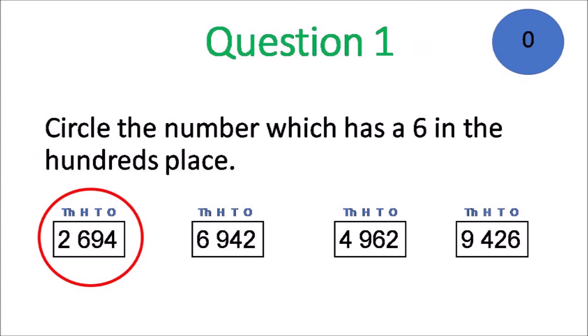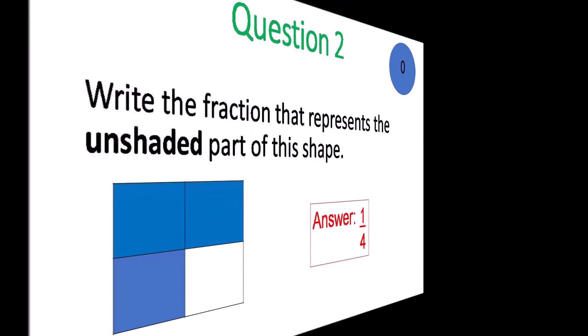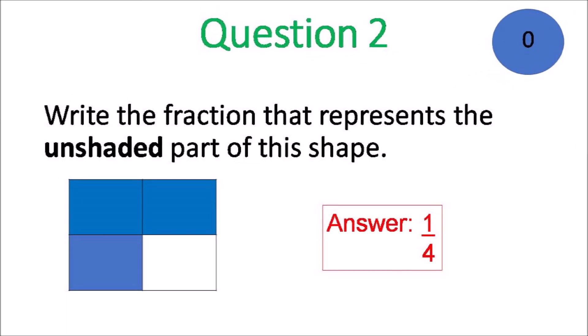And we move on now to the answers. Question 1. Circle the number which has a 6 in the 100s place. The first one. Question 2. Write the fraction that represents the unshaded part of the shape. One quarter.